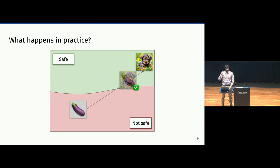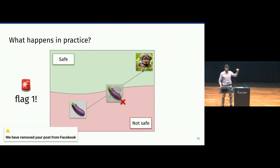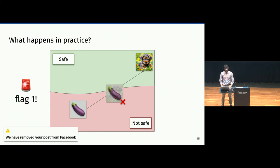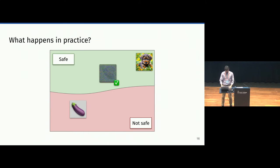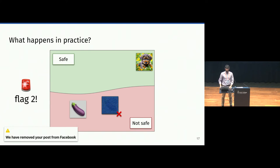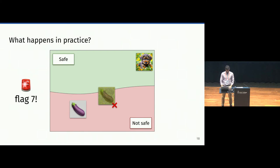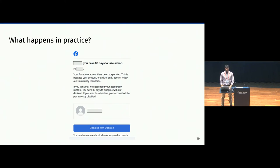As mentioned earlier, we query the model, and when an image gets classified as safe, nothing happens. But if an image gets classified as unsafe, not only do we as attackers observe a notification from Facebook that the image gets deleted, but what Facebook does behind the scenes is flagging our account. We go on with our attack, do another query classified as unsafe, and get flagged a second time. We continue our attack until we get flagged seven times, and after seven times our account gets banned.